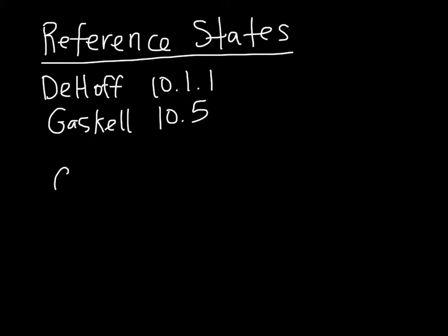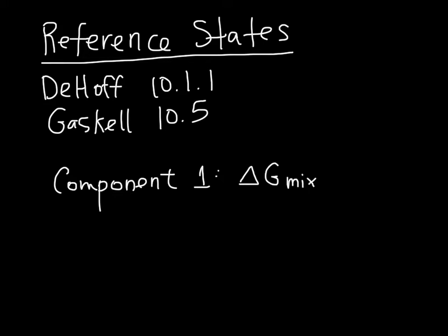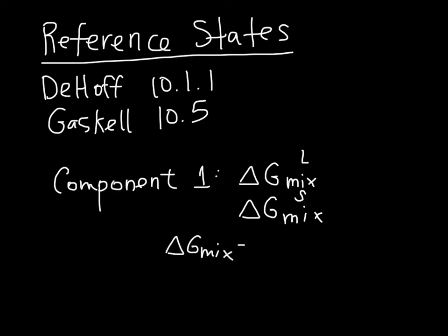Essentially what we have to do is, for every component, make sure that when we're looking at the value of delta G mix for the liquid state and delta G mix for the solid state, we're letting the reference state of component one be the same phase in both. Remember, as we're calculating delta G mix, this is G of the solution minus G of the components at the reference state, so we have to keep the same reference state.